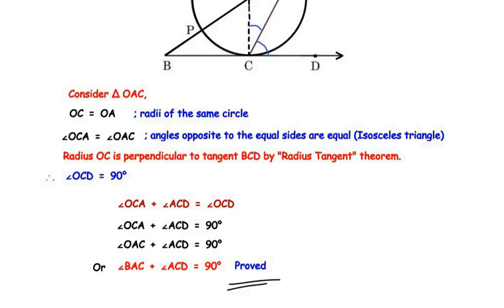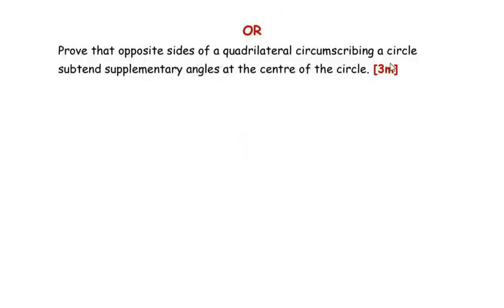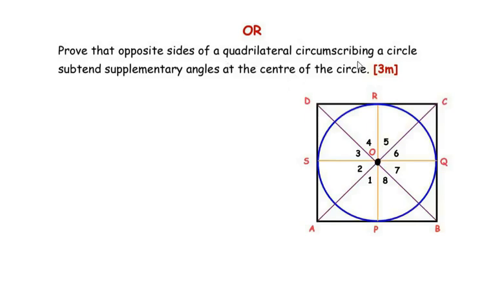Now let us move on to the OR question: Prove that opposite sides of a quadrilateral circumscribing a circle subtend supplementary angles at the center of the circle. A quadrilateral ABCD circumscribes a circle with center O, touching it at points P, Q, R and S. So sides AB, BC, CD and AD act as tangents to the circle at points P, Q, R and S respectively. Supplementary angles means 180 degrees at the center of the circle.